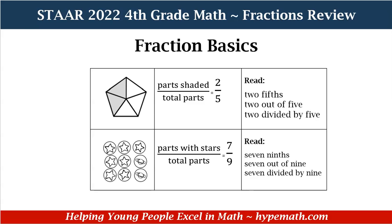Let's look at the top of our chart first. We have a pentagon which has a total of five parts — one, two, three, four, five parts in total — and there are two that are shaded, so our fraction is two over five. A few ways we can read this fraction: two-fifths, two out of five, or two divided by five, because the fraction bar just means division.